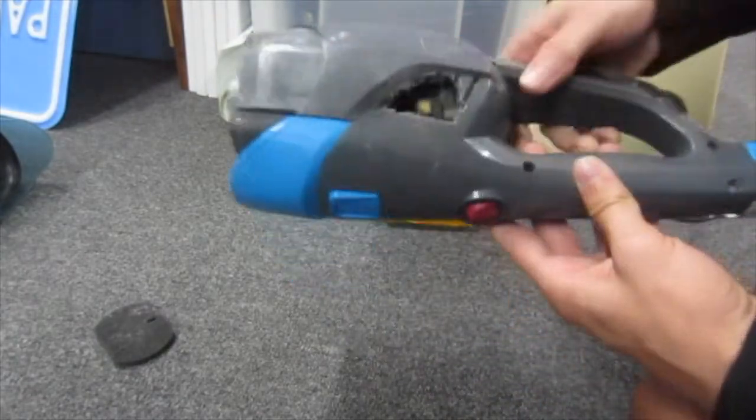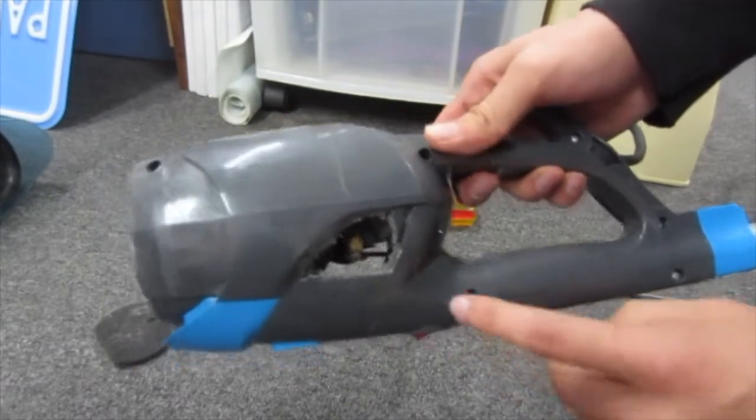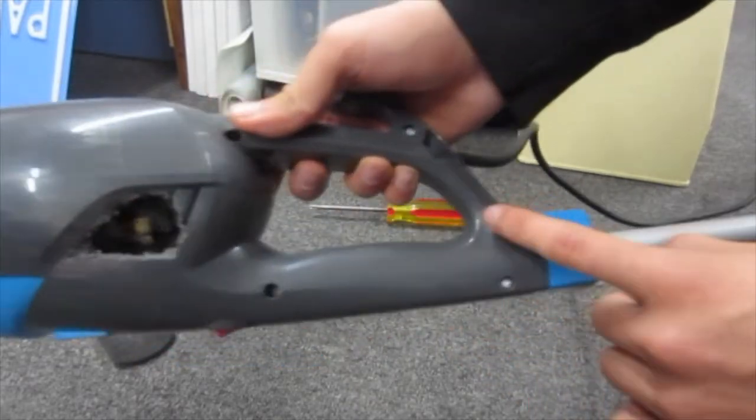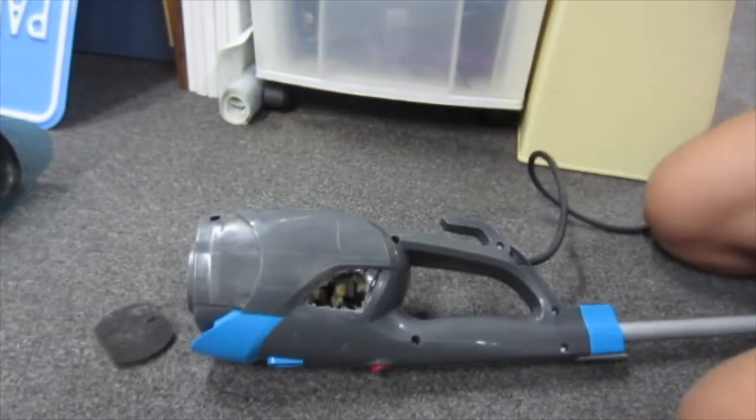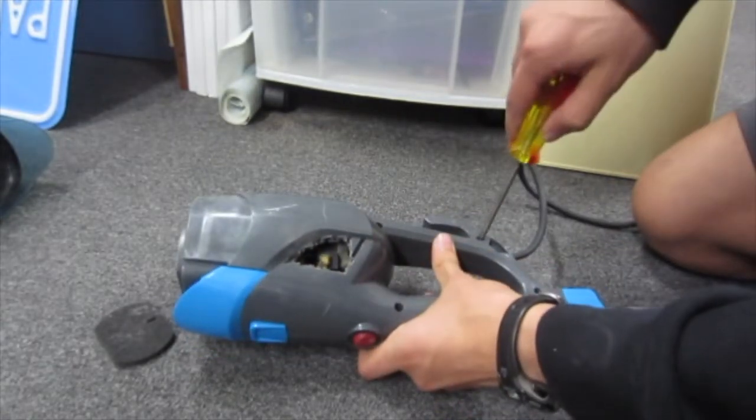And so you can see on the backside, there'll be a number of holes with screws in them. So that's where we're going to be pulling those out right now with just a standard Phillips head screwdriver.